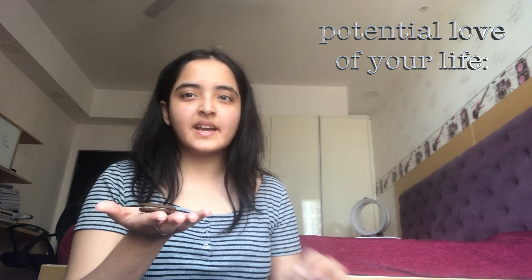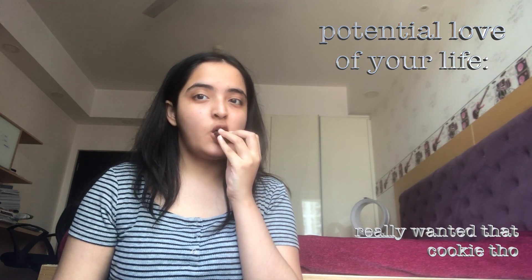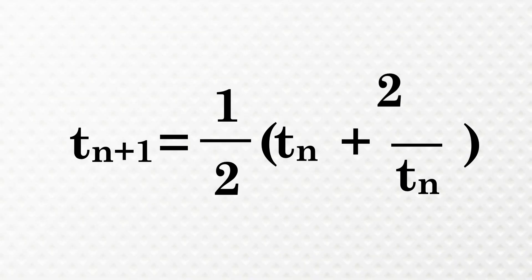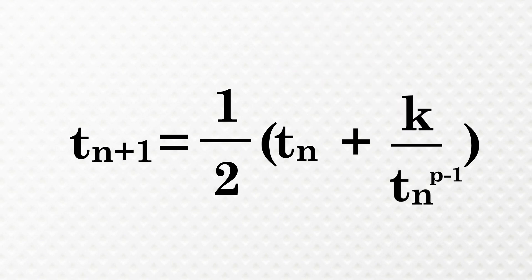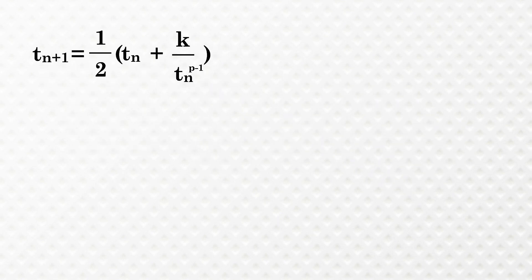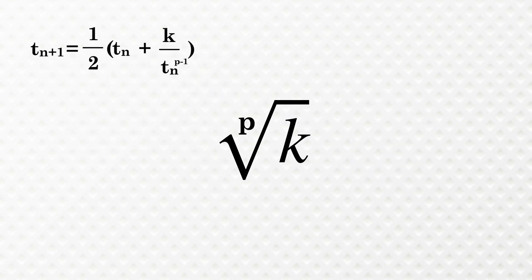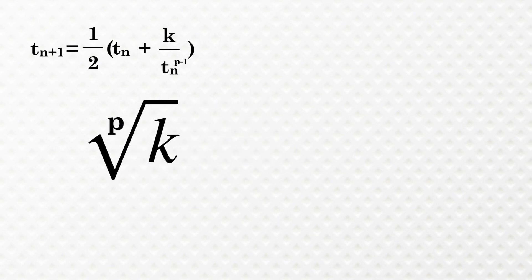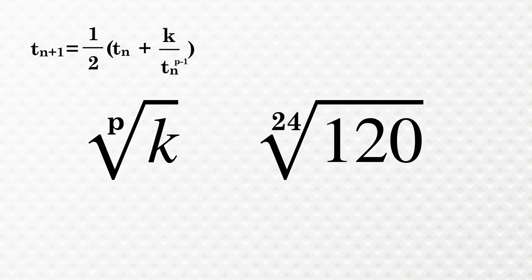I know a magician that can make cookies disappear, but don't you worry — this gets a lot cooler. Let's replace 2 with k and raise tn to an arbitrary power of p. By following the same steps, this process can literally help you calculate the p-th root of k with any initial value of tn. That's right, you can calculate the 24th root of 127 by hand. Get shook.